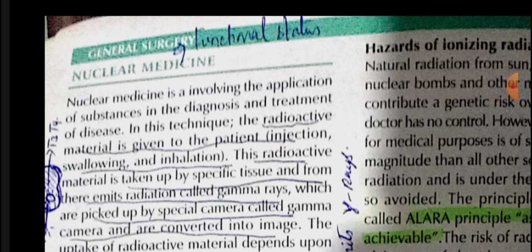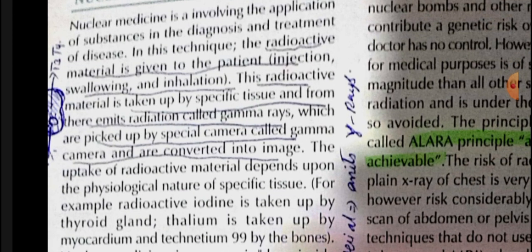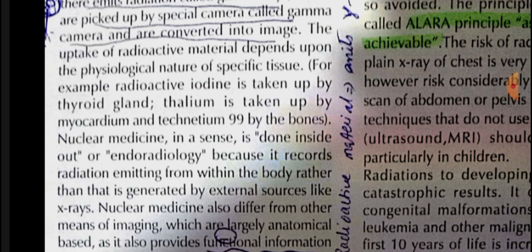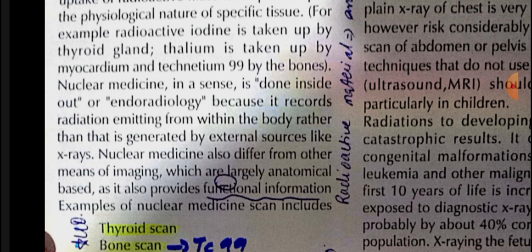The gamma camera detects gamma rays and creates an image. The uptake depends on the specific tissue involved. For example, radioactive iodine is taken up by the thyroid gland. Thallium is taken up by the myocardium — this gives us the thallium scan. Bones take up technetium-99. So each body part takes up the specific radioactive agent designed for it. Nuclear medicine is 'inside-out' — it is endoradiology because it detects radiation emitted from within the body's own tissues, rather than external sources like X-rays.